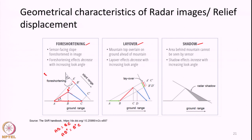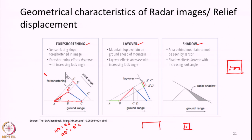The slope AB double-dash is facing the radar antenna, while B double-dash C is facing away from the antenna. Since the hill is symmetrical, we might expect the image distances to be equal. In an optical top-down image, point A, B double-dash, and C would appear equally spaced. But in radar images this will not be the case.